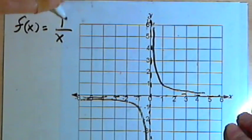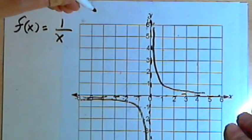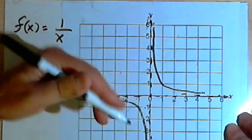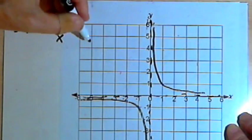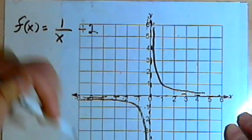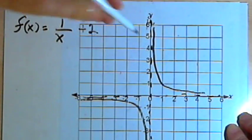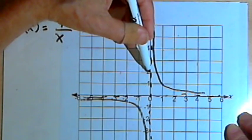Now, if we take this basic fraction 1 over x and we add some constant to it, what we're going to do is raise the whole graph up if the constant is positive, or lower the whole graph down if the constant is negative. So for instance, if I make this 1 over x plus 2, that's going to raise the entire graph up 2 units, and the horizontal asymptote would become y equals 2.